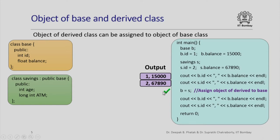After this assignment, the object B will get the values of the data members of the object S, but note that S will be treated as an object of the base class. Only the data members of the base class — id and balance — are going to be taken from S and assigned to B. The default assignment operator for the base class will just copy the values of id and balance from the right-hand side to the data members of the object on which operator= is called. So B.id will have the value of S.id which is 2, and B.balance will have the value of S.balance which is 67,890.